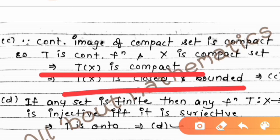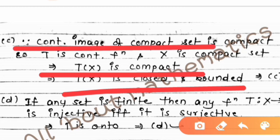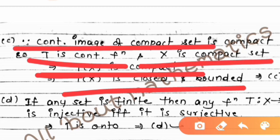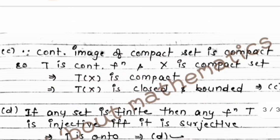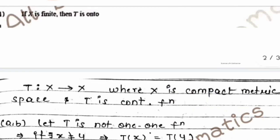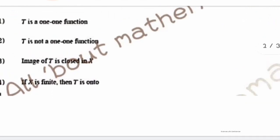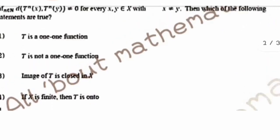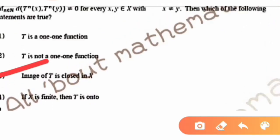T(X) is closed and bounded, which means it is compact. Since T is a continuous function and X is a compact metric space, the image T(X) is compact. A compact subset of a metric space is closed, so option C — the image of T is closed in X — is correct.